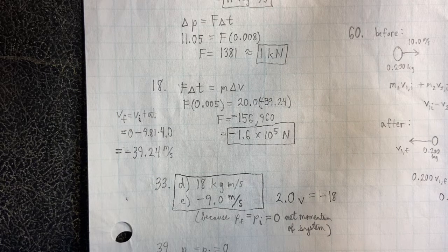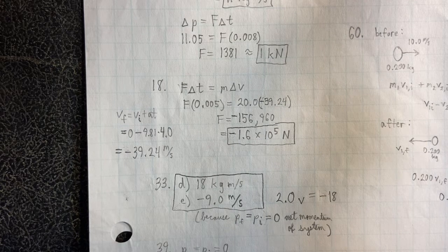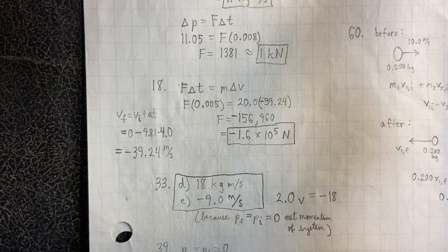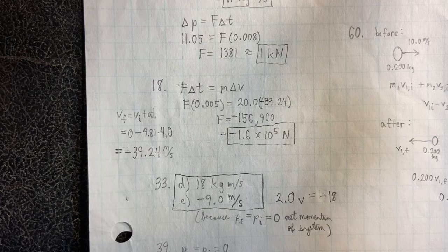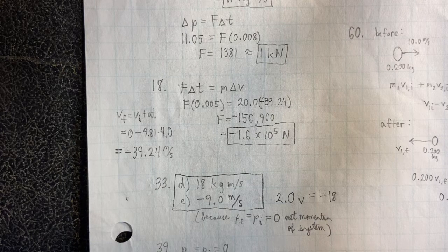Okay, so once we found that, that's really all there is to the problem. There's no major steps involved. They just want to make sure that you understand that mass times velocity is momentum. So the setup is 2.0V equals negative 18.